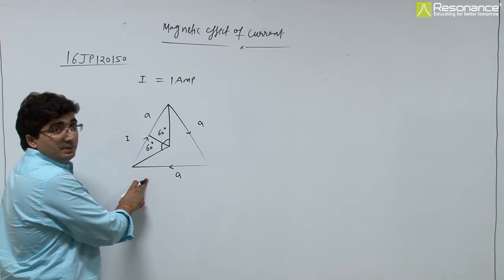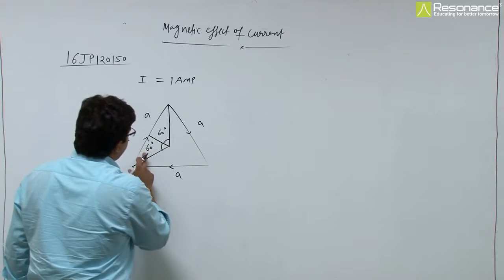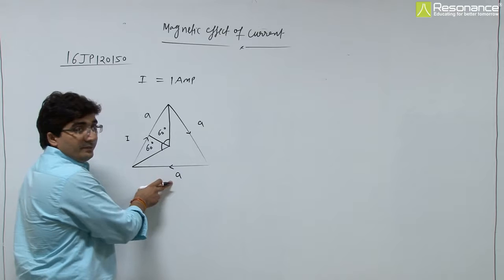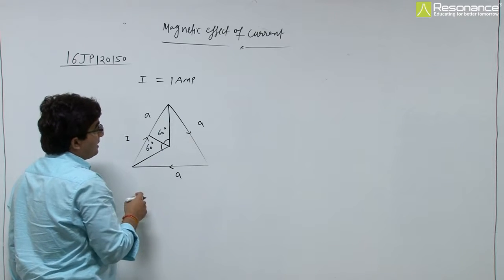So here are three wires. These are the sides of the triangle, and the total magnetic field is the sum of contributions from all three wires.